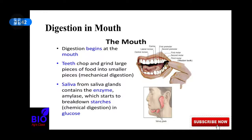After mechanical digestion, when food is converted into smaller pieces, it mixes with saliva that is secreted from the salivary glands. I have discussed about different kinds of digestive glands in my previous class. If you haven't done that class yet, please go to my playlist or my YouTube channel to get that video. If you still have any confusion, let me know and put your question in the comment box.